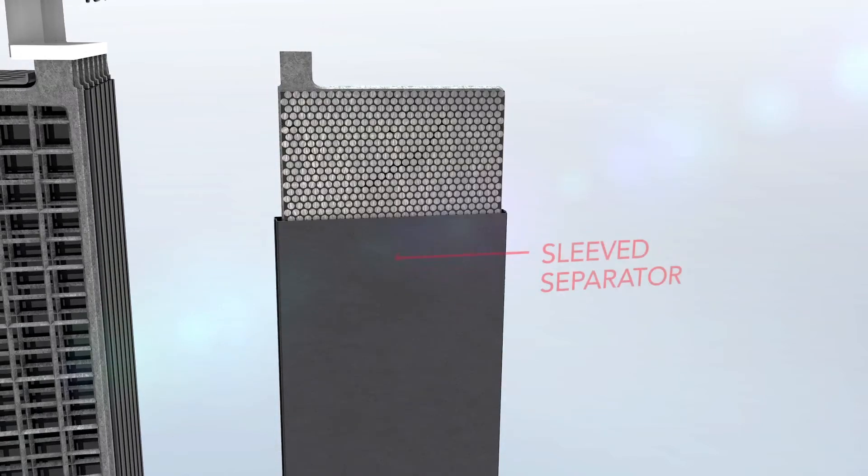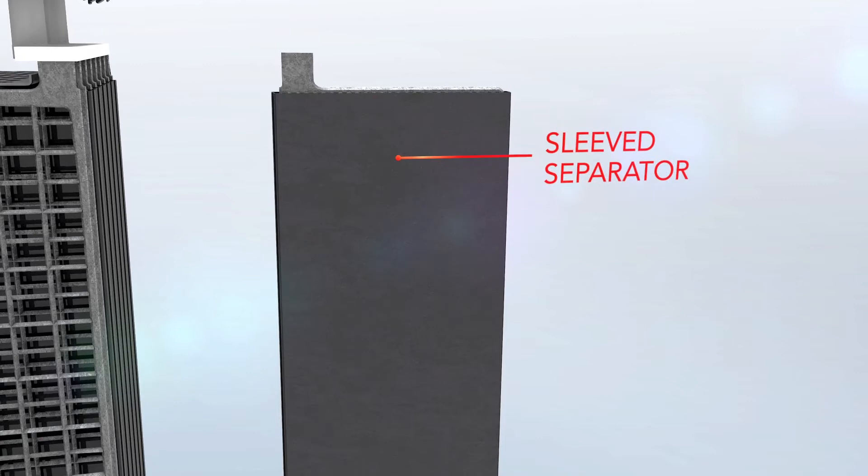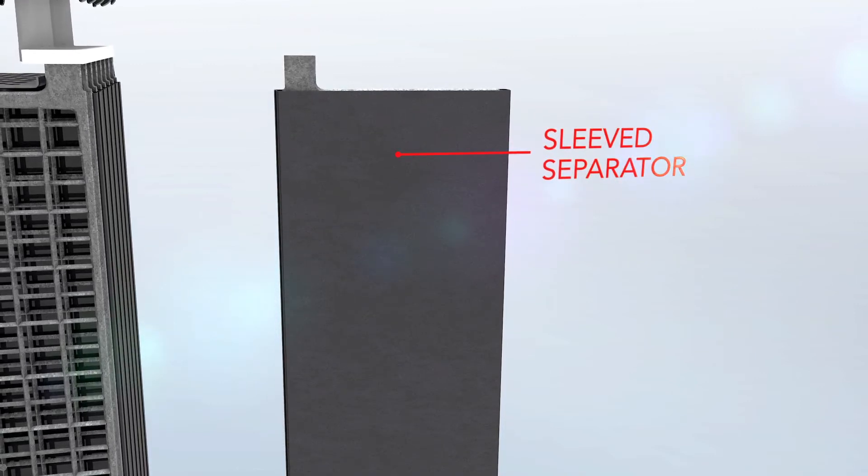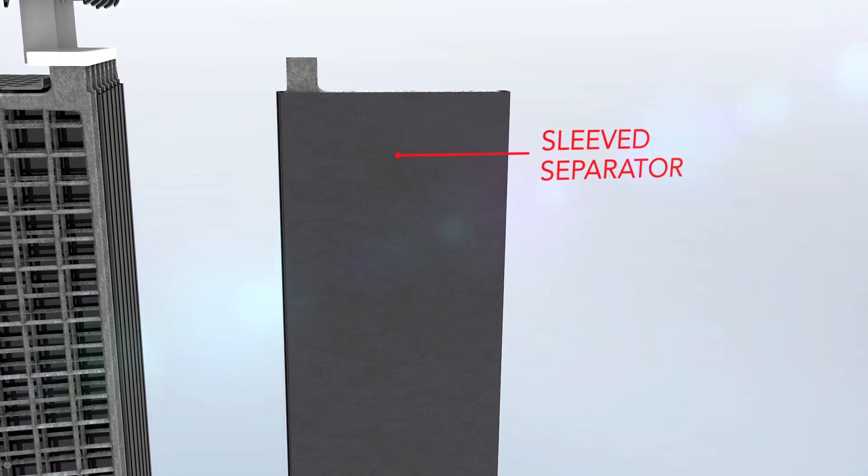The separator encases the positive plate to eliminate potential problems with misalignment. The sleeve, in addition to the retainer, also prohibits shorts between the sides of the plates.